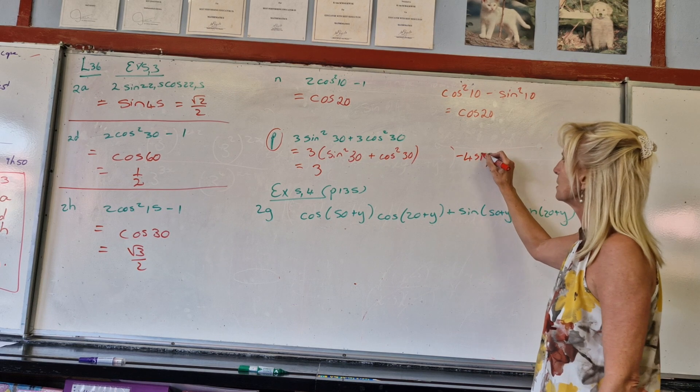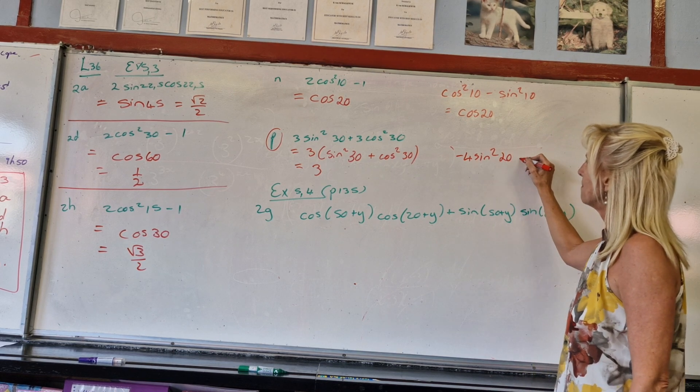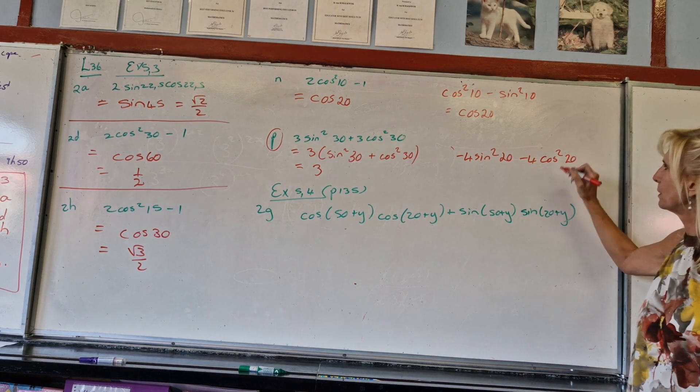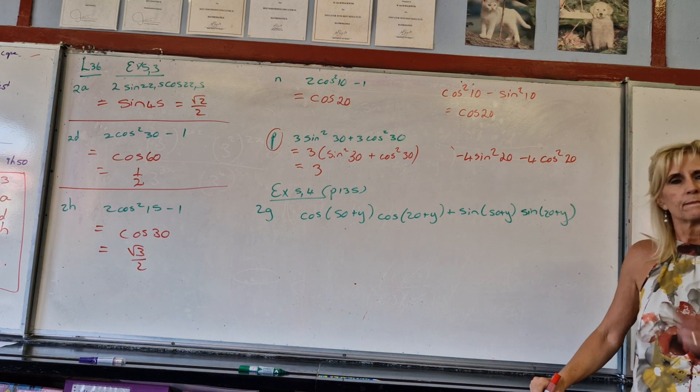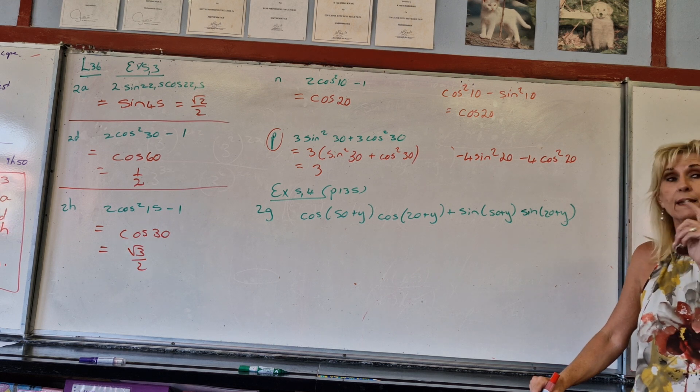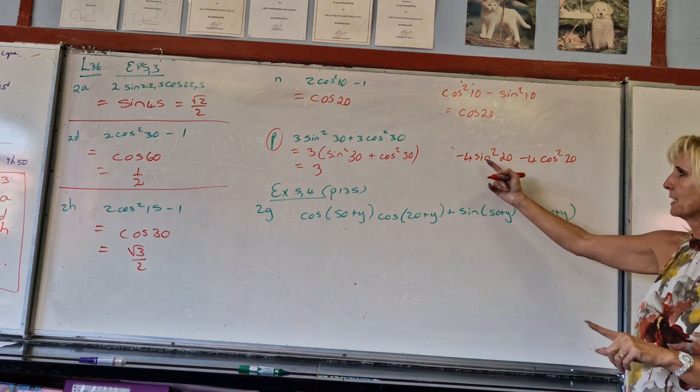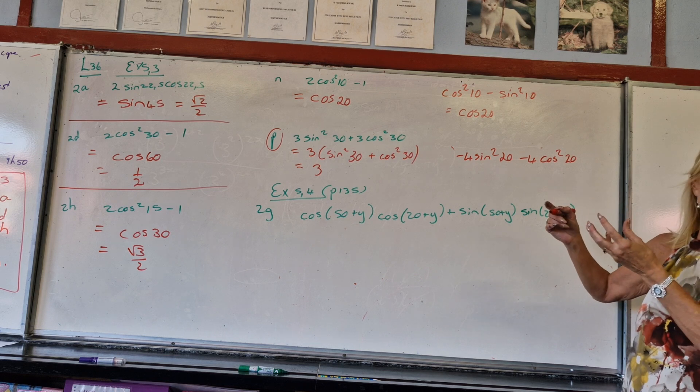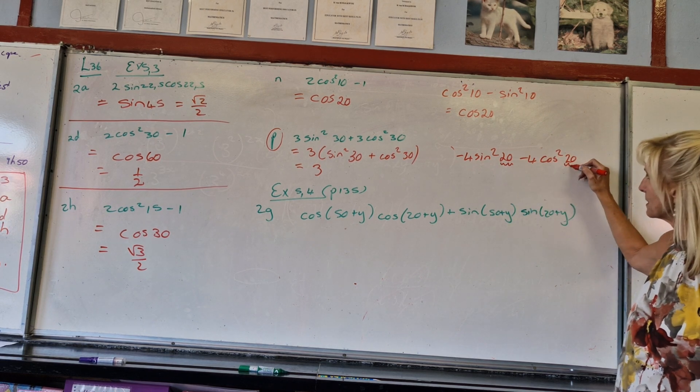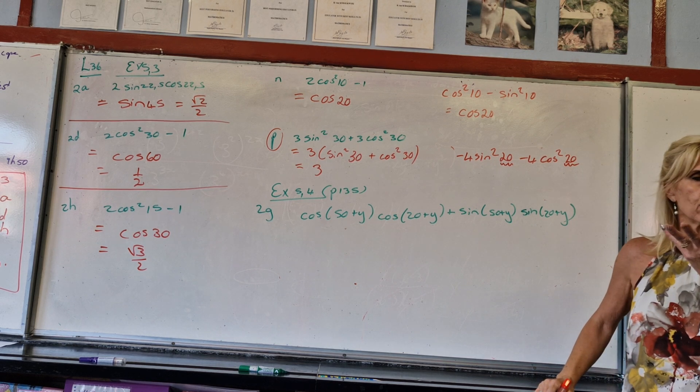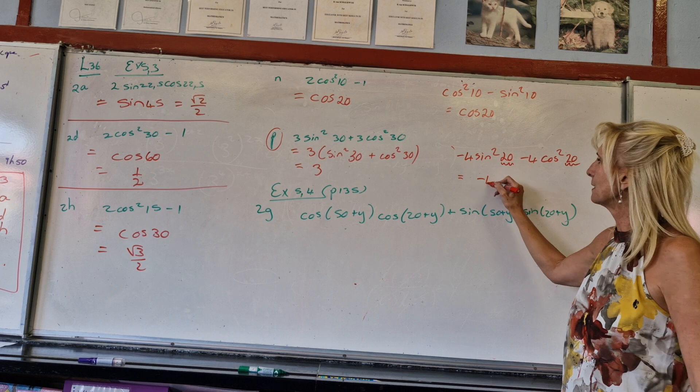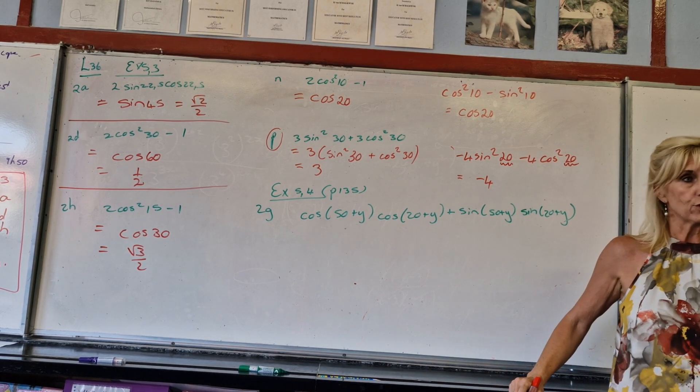And please be careful that those angles must be the same, whether it's theta or alpha or a number like 20. Doesn't matter. That is then going to be negative 4. So that you're still on track.